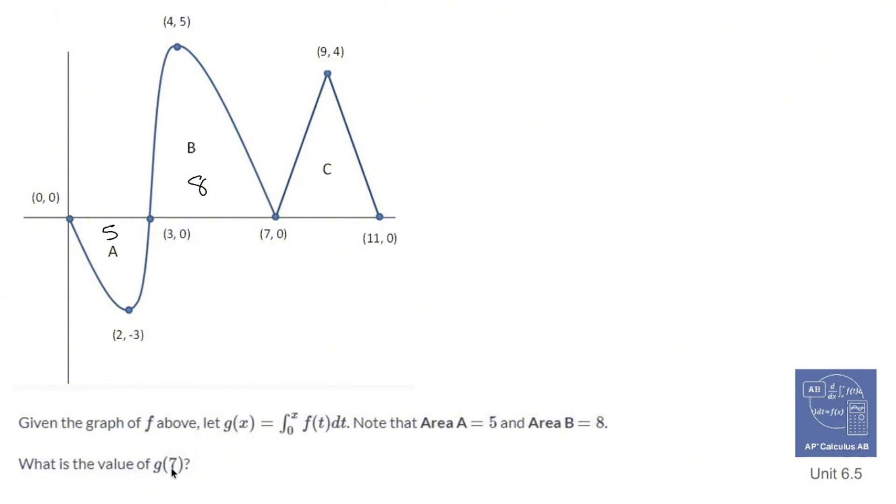Oh, I don't have C. But it's asking me for the value of g of 7. So the value of g of 7 is going to be the integral from 0 to 7 of f of t dt.